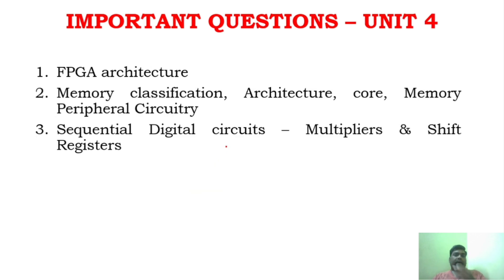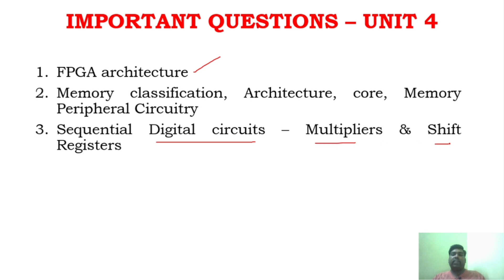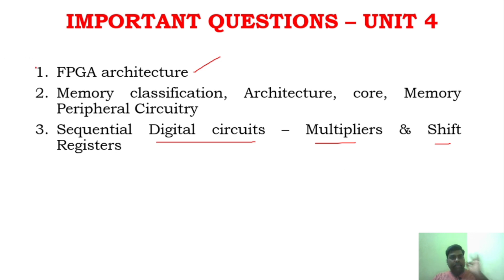Unit 4 has a lot of topics to cover, but focus on the key ones. FPGA architecture is a very important question. Memory classification is another definite question — at least one question will come from memory classification and implementation. In sequential and digital circuits, focus on multipliers and shift registers. Barrel shift registers in particular had many questions in the previous regulation.